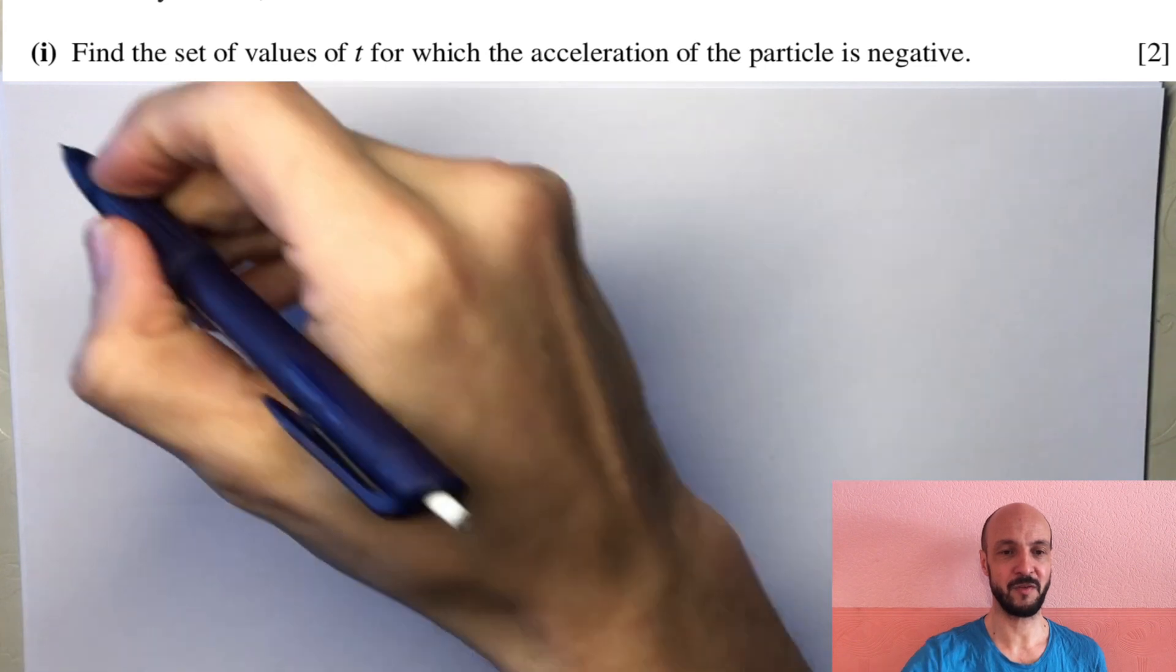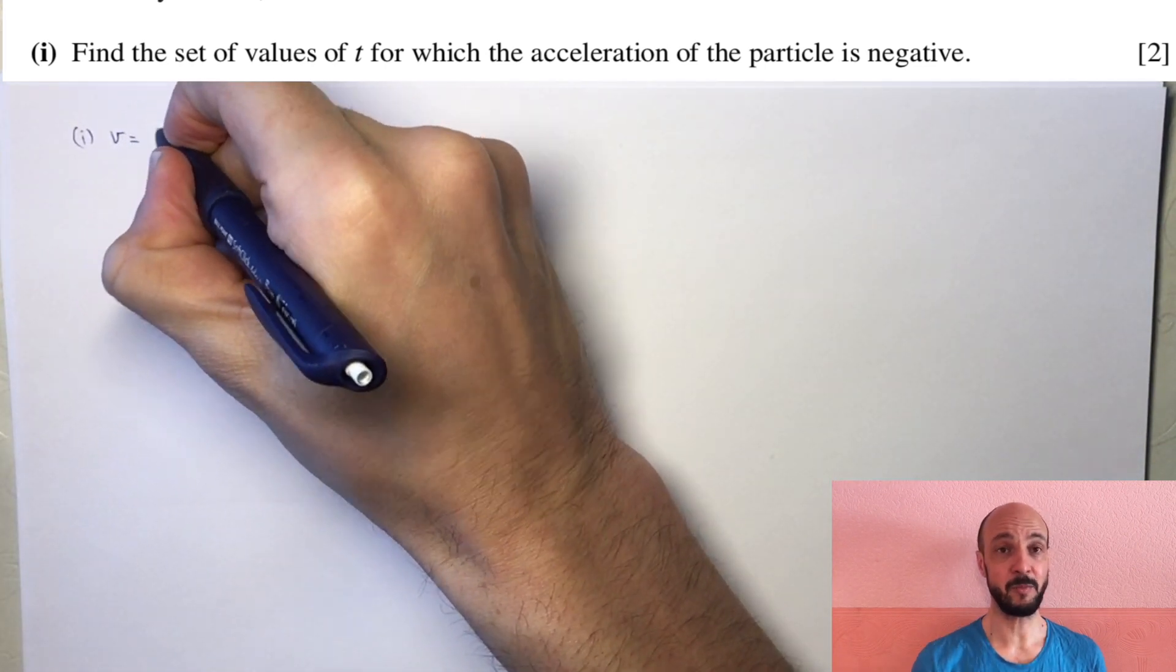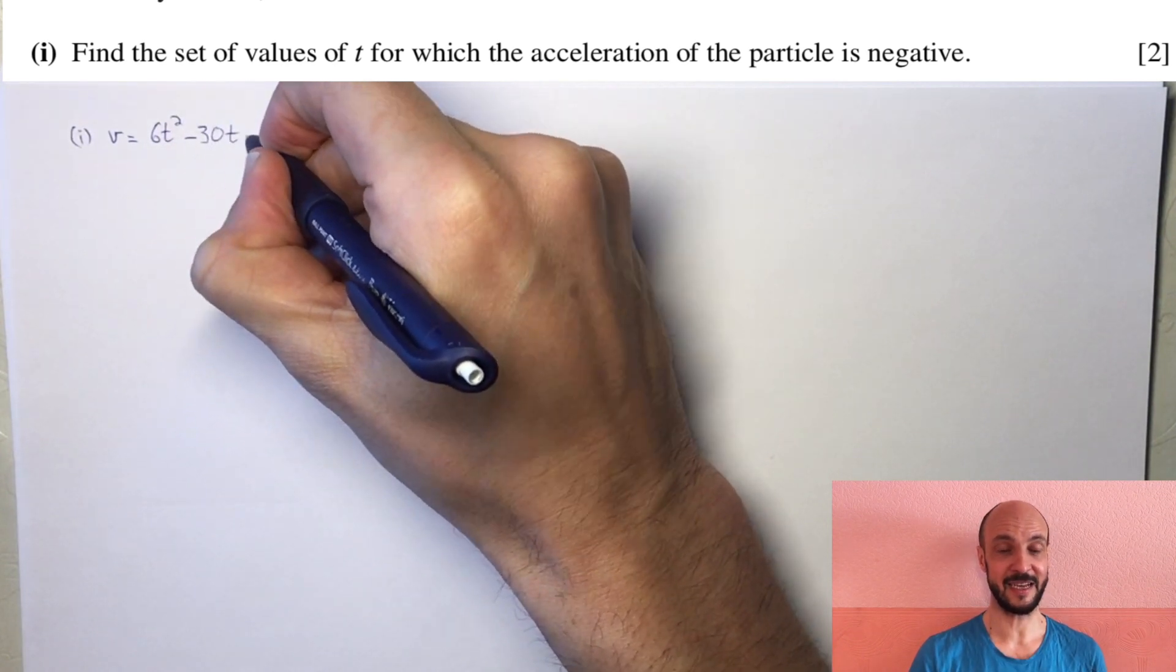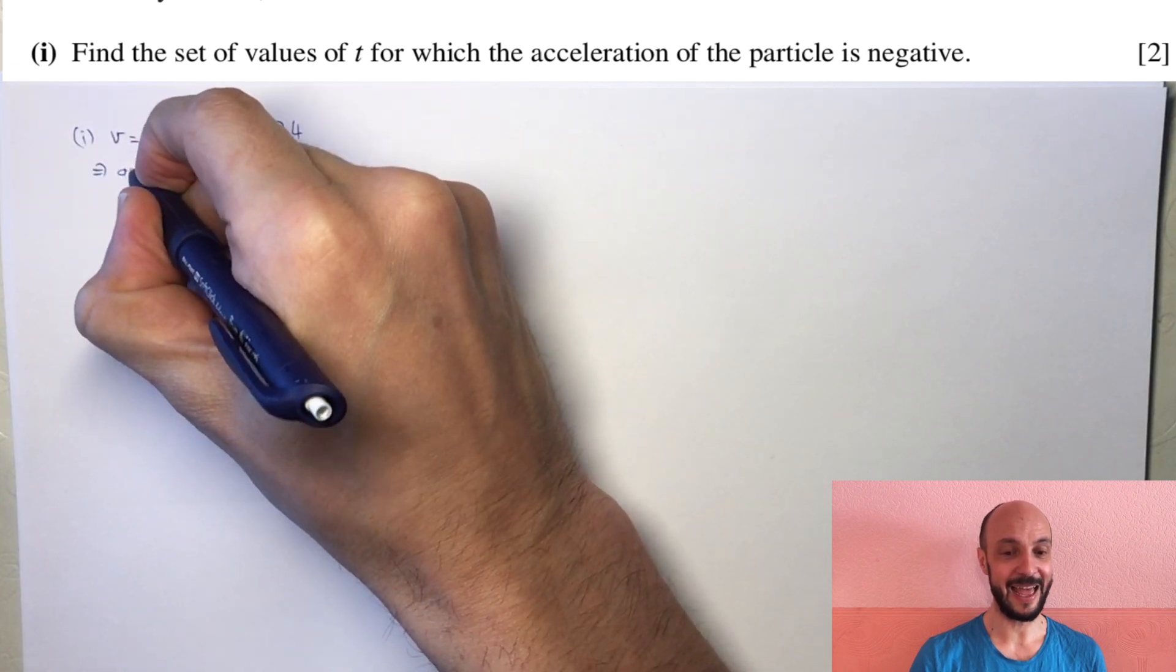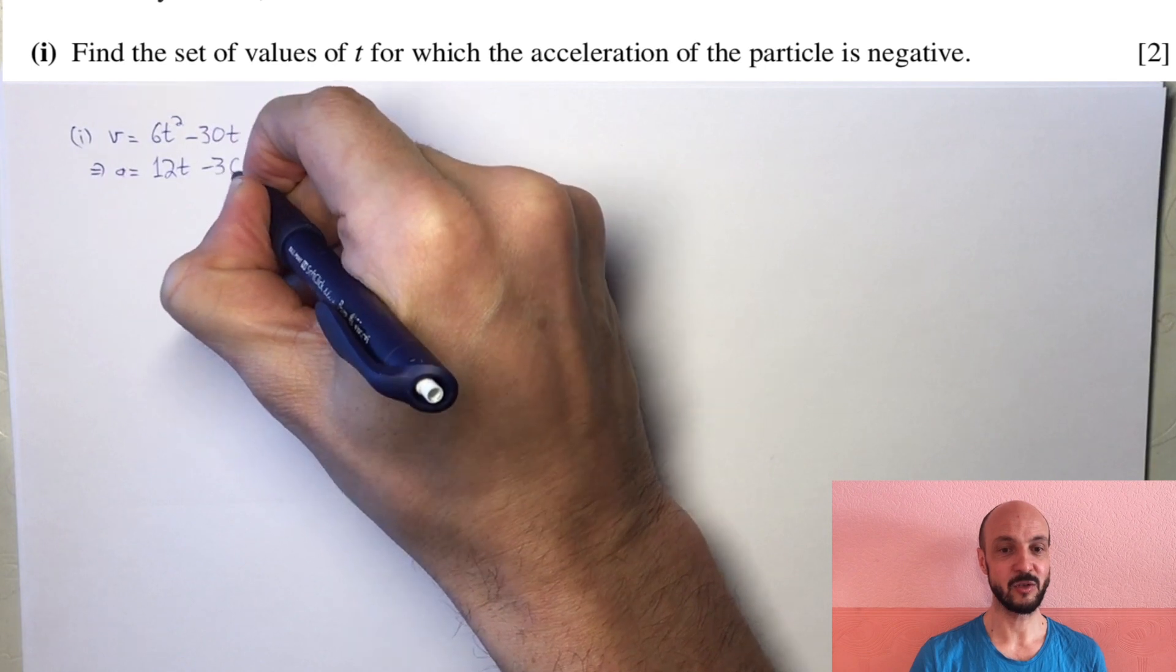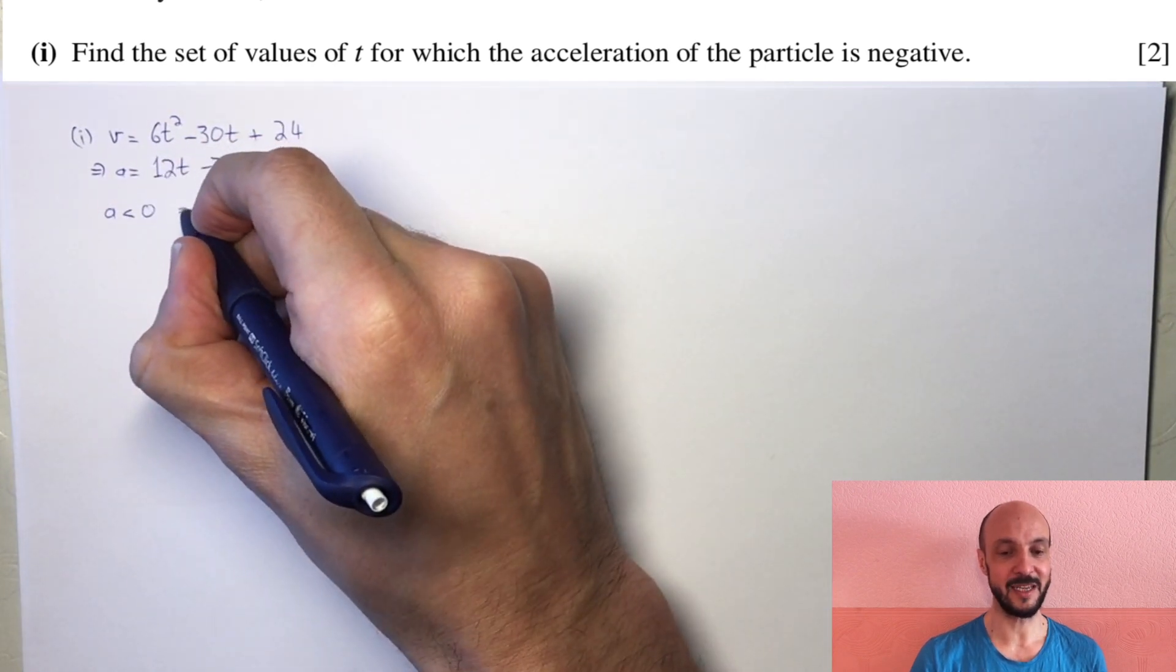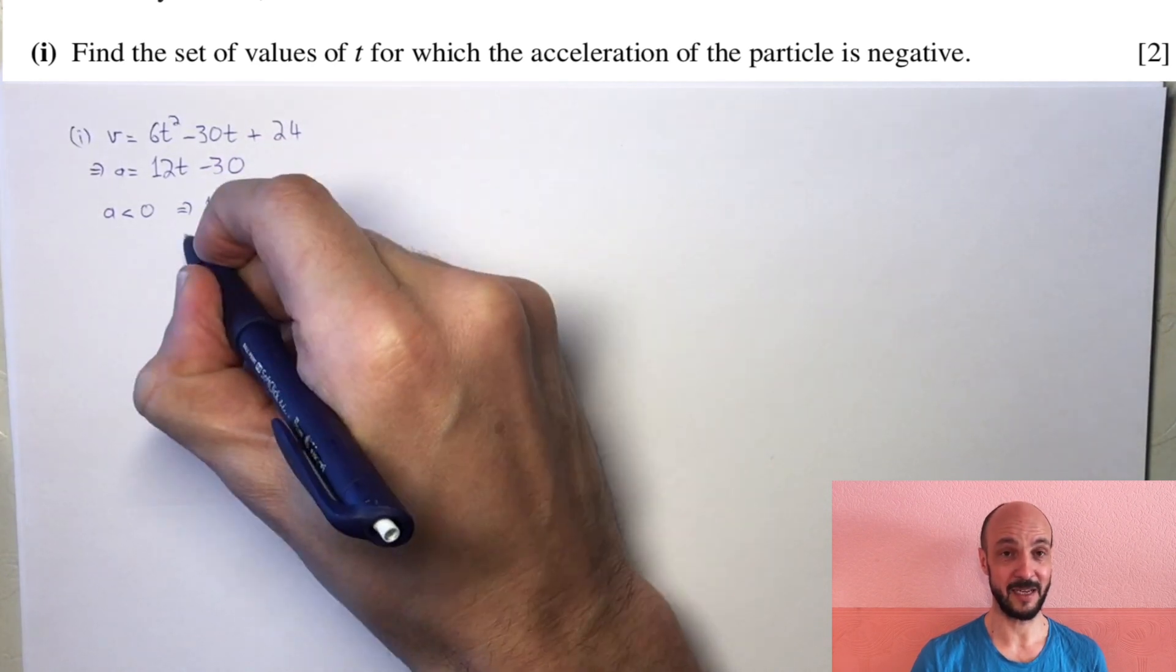For the first part we want to find those values of t for which the acceleration is negative. We've been given velocity, so we differentiate that equation to get acceleration. If we differentiate we get a equals 12t minus 30, and for the acceleration to be negative we need 12t to be less than 30.